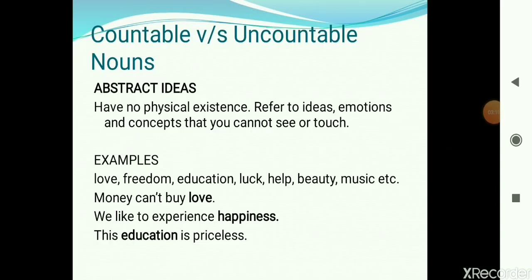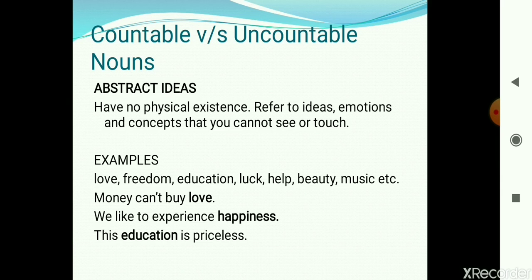Abstract ideas are uncountable nouns because, as we have studied, abstract ideas have no physical existence — they refer to ideas, emotions, and concepts that you cannot see or touch. For example, love is an uncountable noun; you cannot touch it and you cannot count it — you cannot say two love or five love. Some examples are love, freedom, education, luck, help, beauty, and music. In the examples: 'Money can't buy love,' 'We like to experience happiness,' 'This education is priceless' — love, happiness, and education are all uncountable nouns.